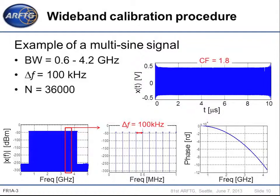Here is an example of a numerically generated multi-sine signal. This signal is generated in the bandwidth between 0.6 and 4.2 GHz with a resolution of 100 kHz. Phases of the sinusoids are calculated using the Schroeder algorithm. The use of the Schroeder algorithm with this phase distribution allows us to reduce the dynamic of the time domain multi-sine signal. After that, this signal is converted from digital to analog domain using an arbitrary waveform generator.